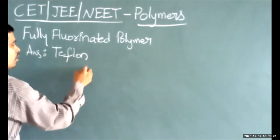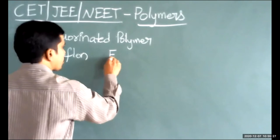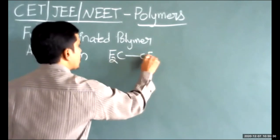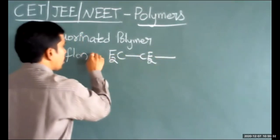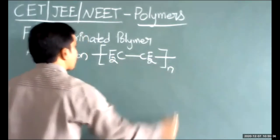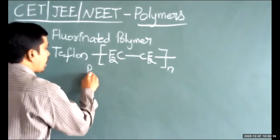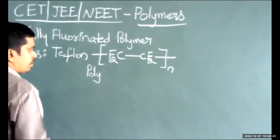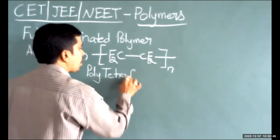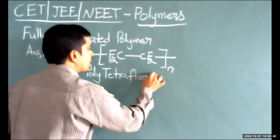How can we say teflon? Because teflon is represented as -(CF₂-CF₂)ₙ-, taken n times, meaning poly. It is derived from tetrafluoroethene.